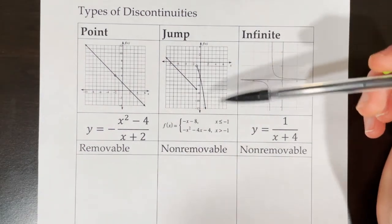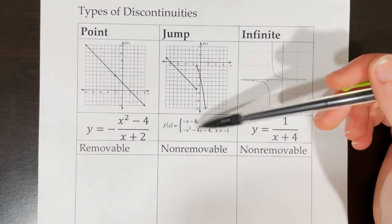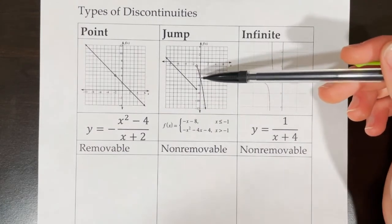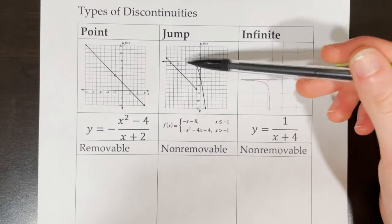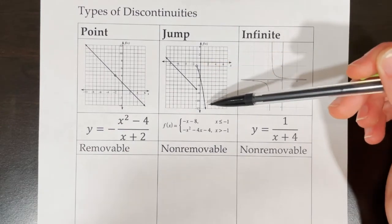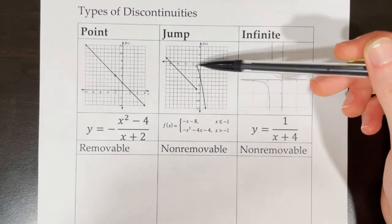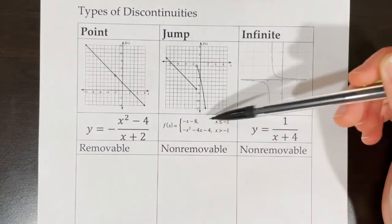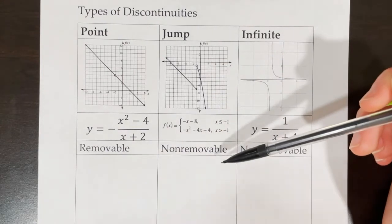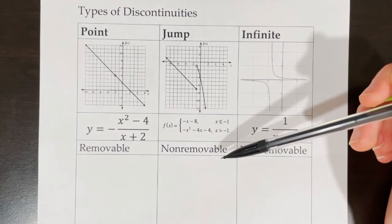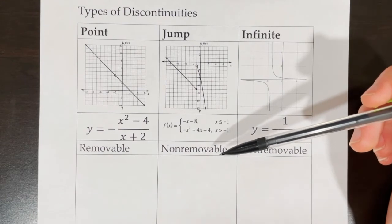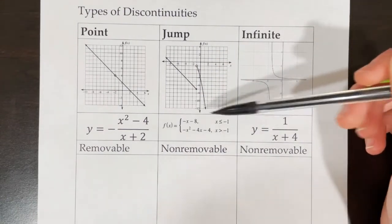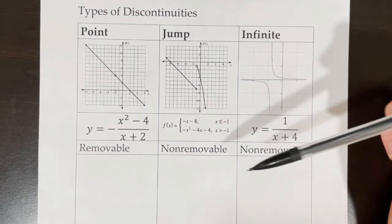A jump discontinuity is when you have a piecewise function and the pieces of the function are not lining up. We have this big gap between negative x minus 8 and the other piece of the function. This is considered a non-removable discontinuity because there's nothing you can do that will make these functions go together — they are what they are. It's non-removable.